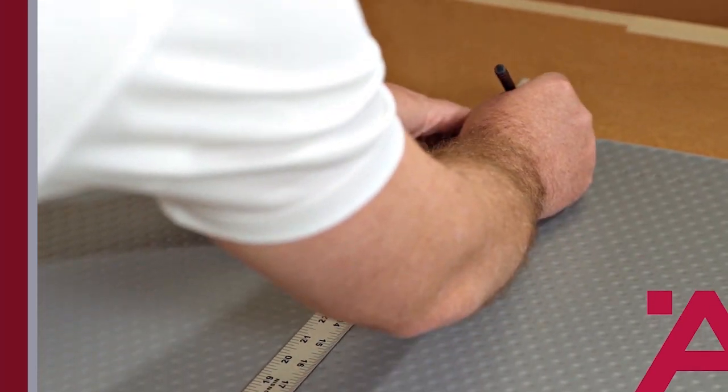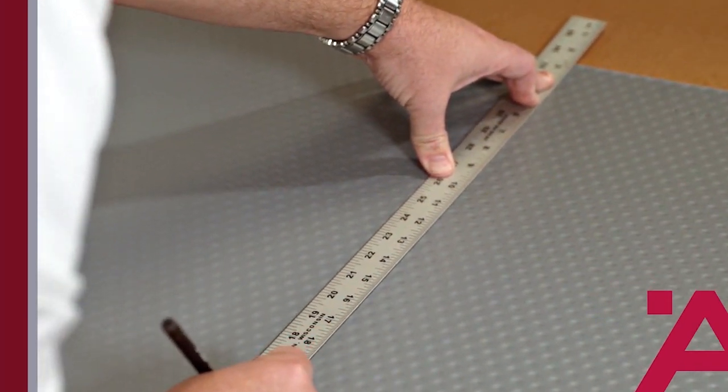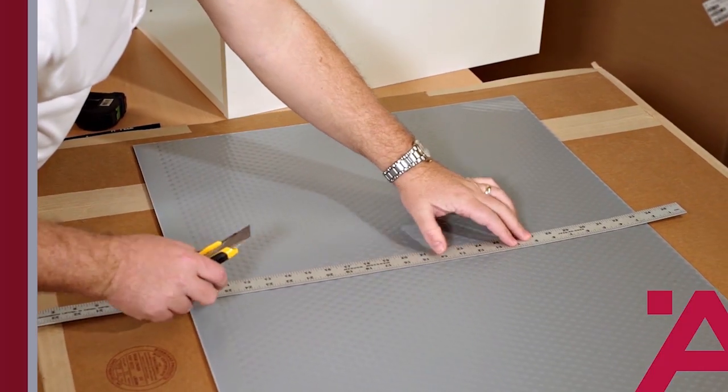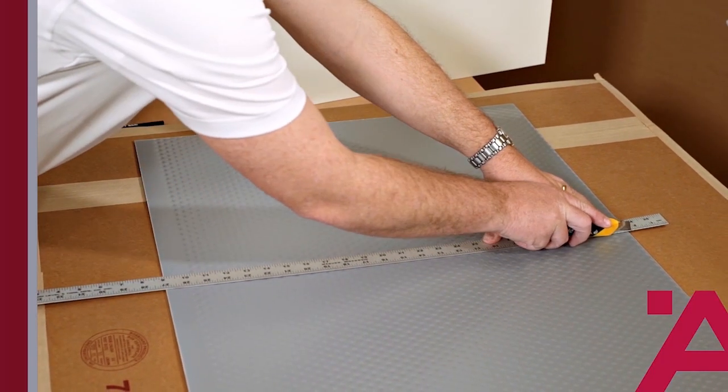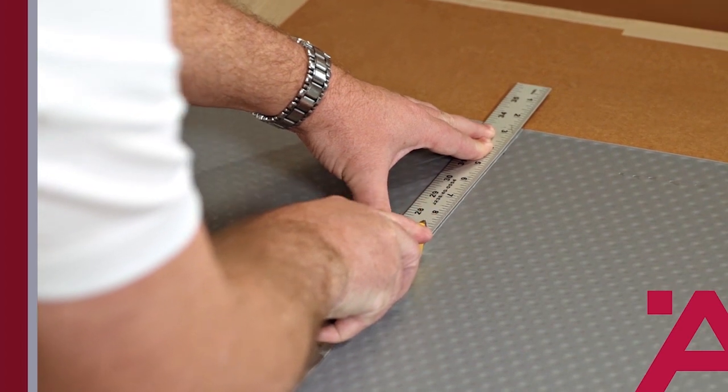Next, we're going to draw a cutting line with a straight edge. Then using that straight edge as a guide, we'll score the backside of the mat with a utility knife.